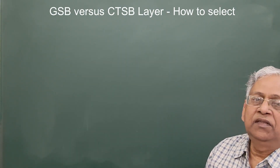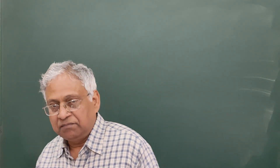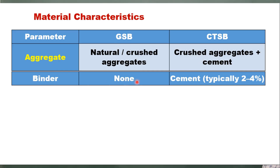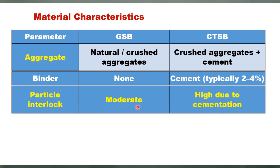Let us now understand the difference between these two layers, starting with material characteristics. For aggregate, in the case of GSB it can be either natural or crushed aggregates, but for CTSB, crushed aggregates are preferred. Although IRC-37 says all materials usable for GSB can also be used in CTSB, crushed aggregates plus cement is preferred for the CTSB layer. There is no binder required for GSB, whereas for CTSB we use 2–4% cement. Particle interlocking in GSB is moderate, depending on particle shape and number of crushed faces, and for this reason riverbed material is not preferred unless it also has crushed faces.